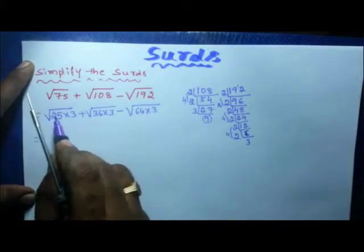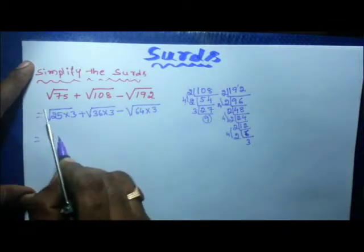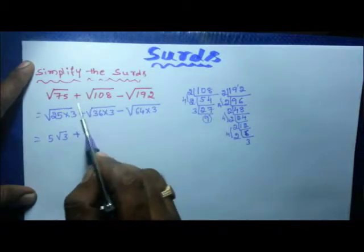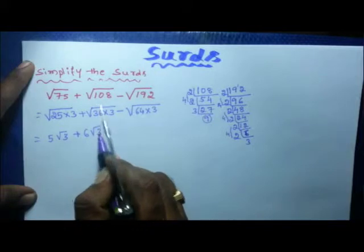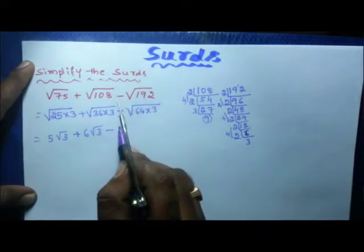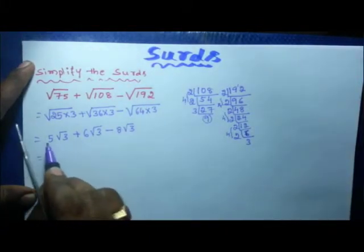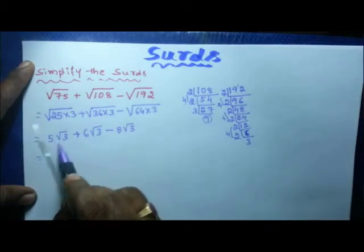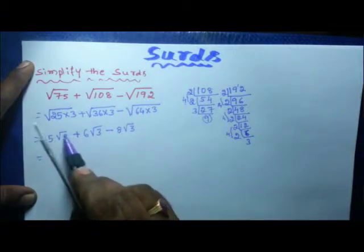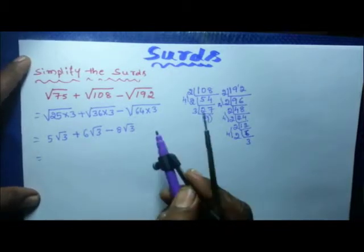Now take the square roots: square root of 25 is 5, so we write 5 times square root of 3. Plus, square root of 36 is 6, so we write 6 times square root of 3. Minus, square root of 64 is 8, so we write 8 times square root of 3. Now see — square root of 3, square root of 3, square root of 3: order is same and radicand is same, so these three are like surds.